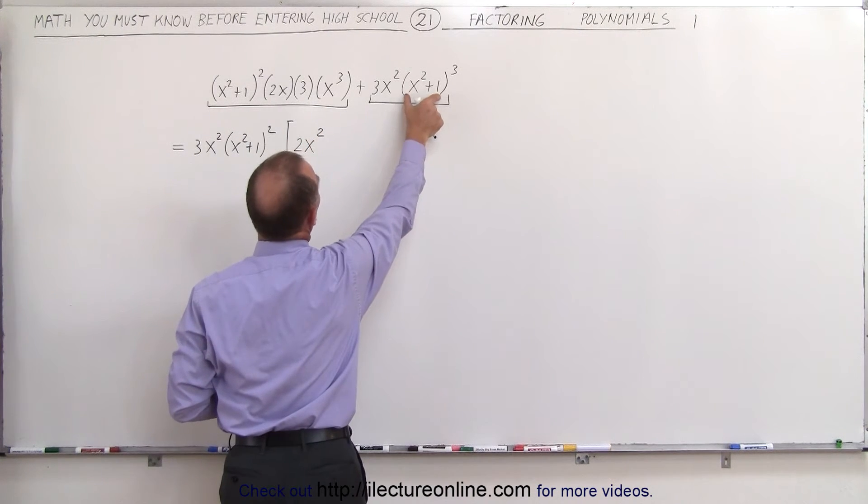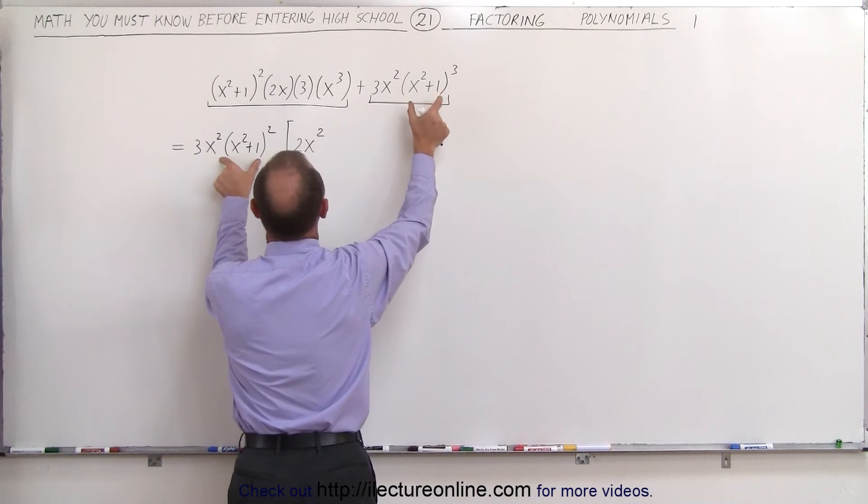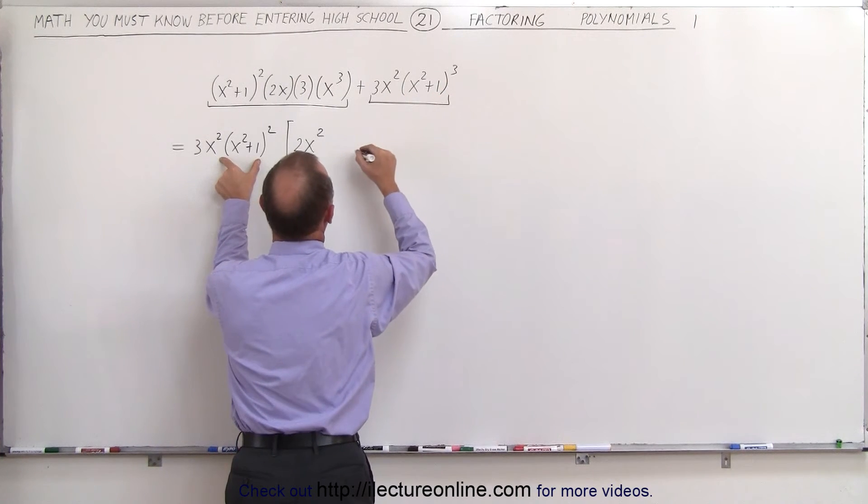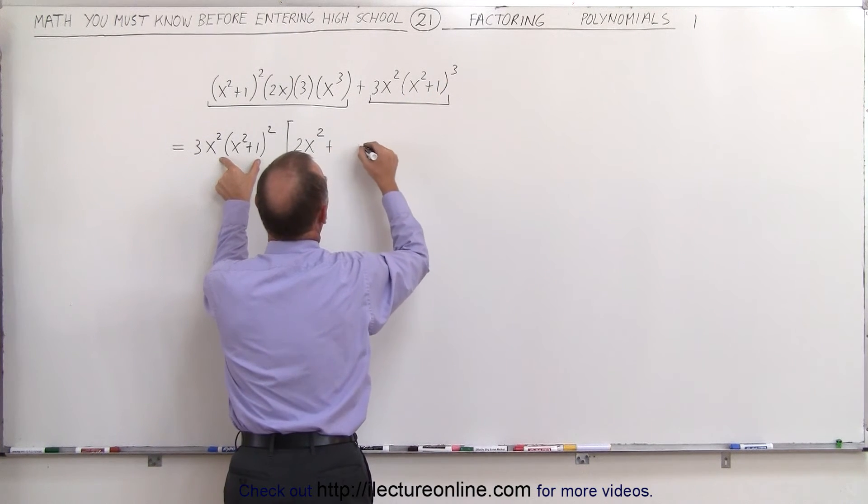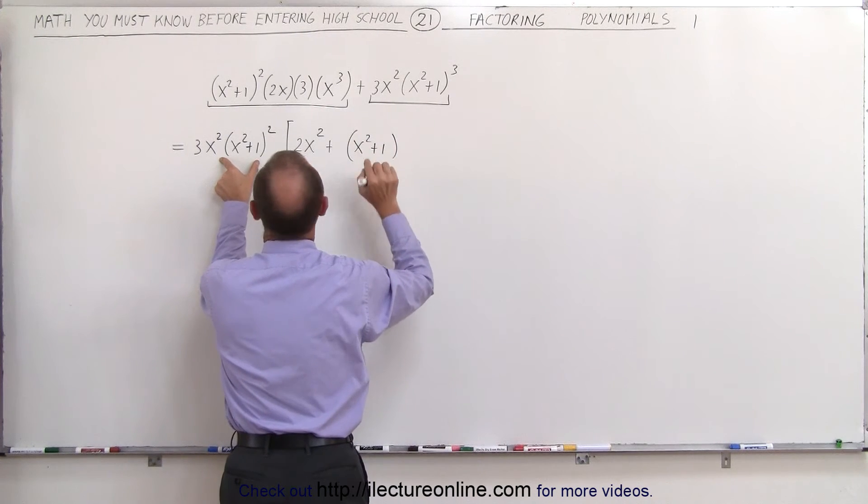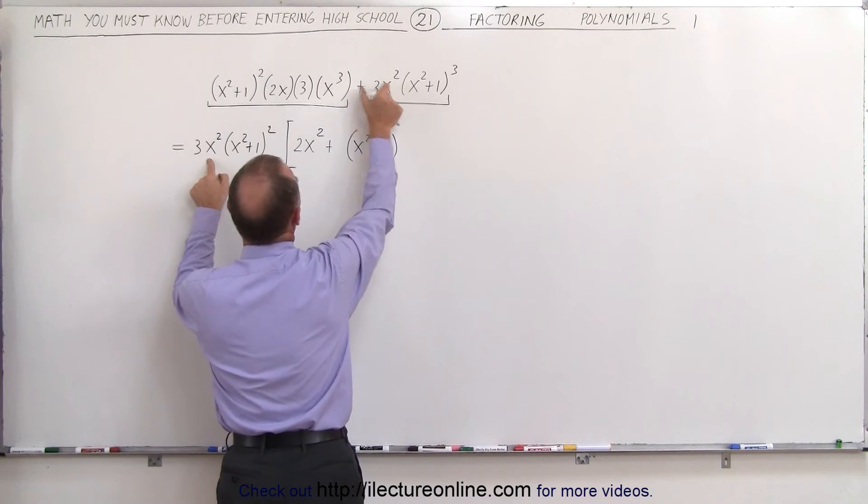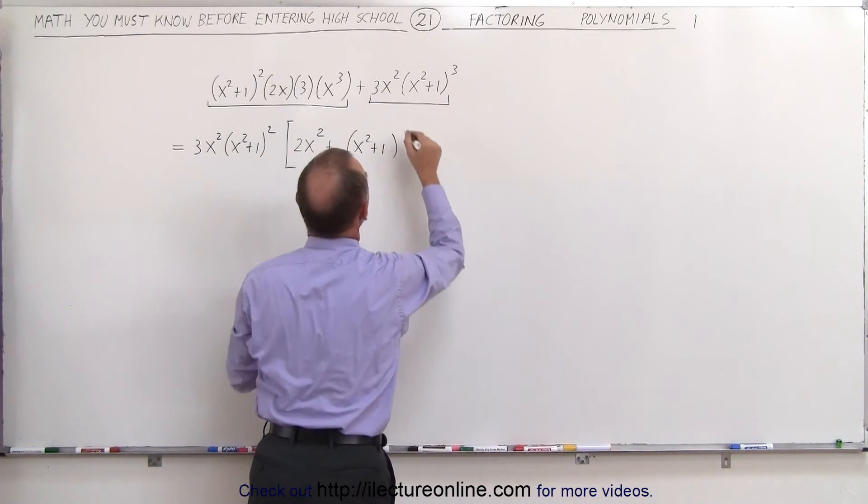Over here notice we have an x squared plus 1 cubed. We only took out an x squared plus 1 squared. So we're left with an x squared plus 1, and I factored out a 3x squared so the 3x squared is gone. So this is the only thing that's left.